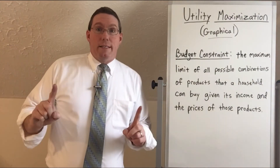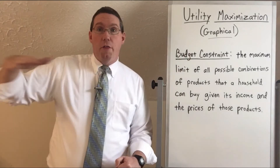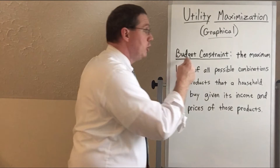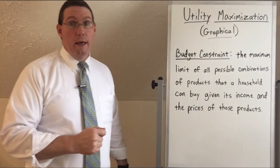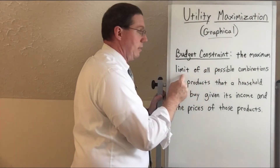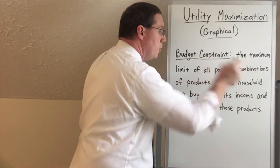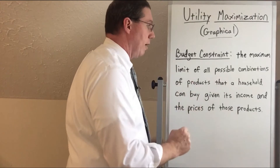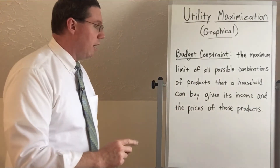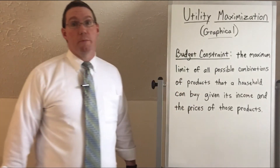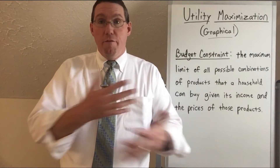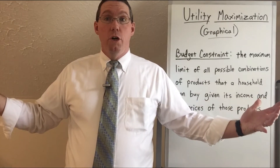The limit on how many of all the things you can buy given your limited income is called a budget constraint. A budget constraint is the maximum limit of all possible combinations of products that a household can buy given its income and the prices of the products you're buying.